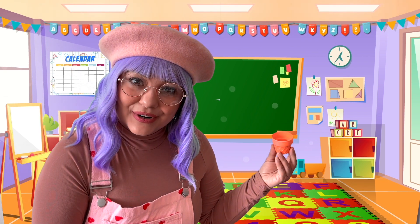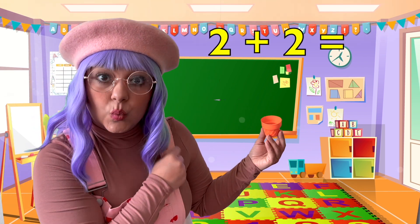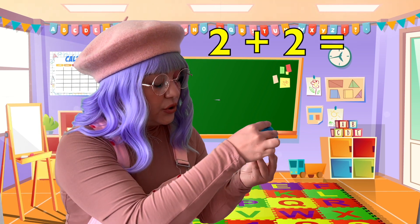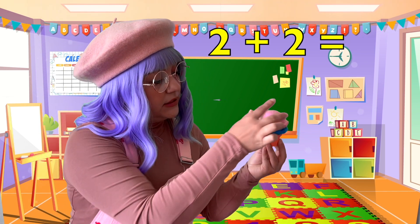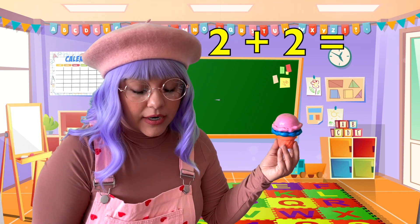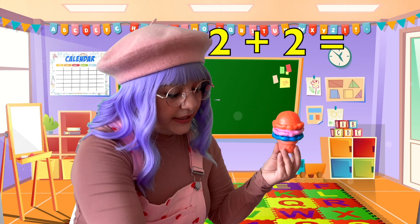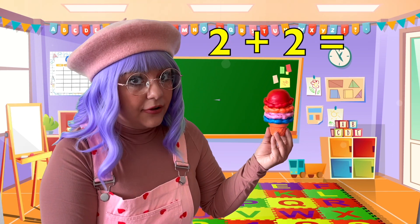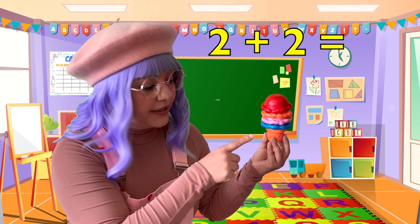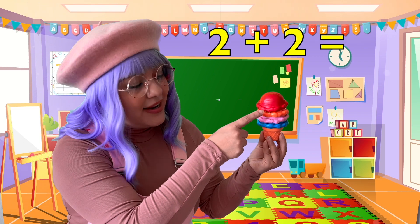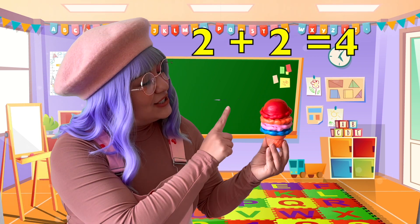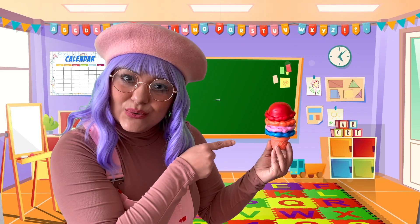Now let's do number 4: 2 plus 2. What's 2 plus 2? Let's add 2 scoops — 1, 2. Plus 2 more — we're adding 2 more: 1, 2. Let's count them all together: 1, 2, 3, 4. 4 scoops. 2 plus 2 equals 4.